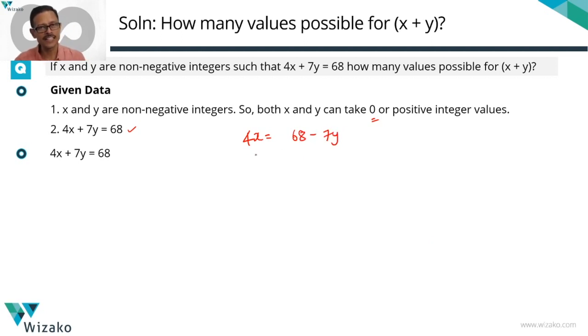x is a non-negative integer. If x is an integer, 4x is going to be a number that is divisible by 4. That's something we have established. 4x is divisible by 4, then obviously 68 minus 7y will be divisible by 4.